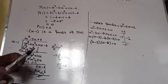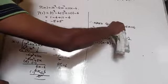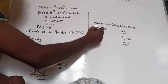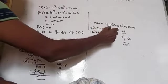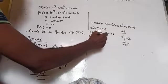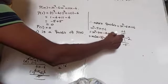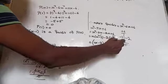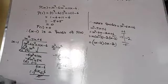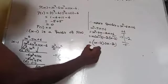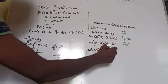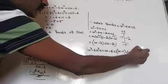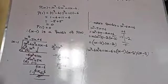We are not finding zeros here, just factorizing. So x² - 5x + 6 = x² - 3x - 2x + 6 = x(x - 3) - 2(x - 3) = (x - 3)(x - 2). Therefore the factors of x³ - 6x² + 11x - 6 are (x - 1)(x - 2)(x - 3).